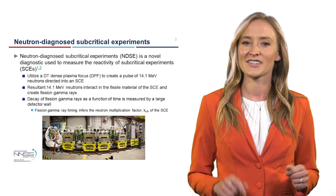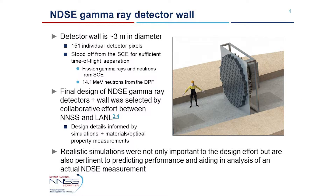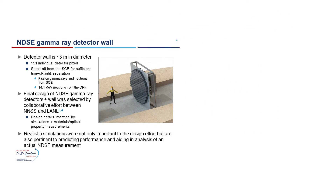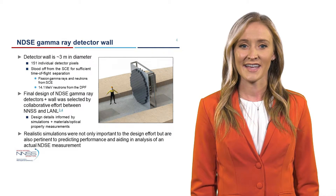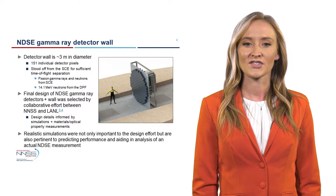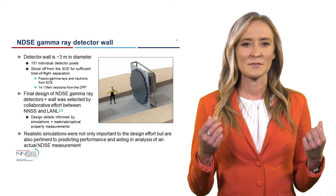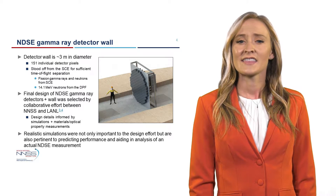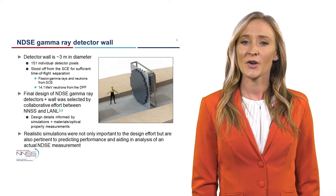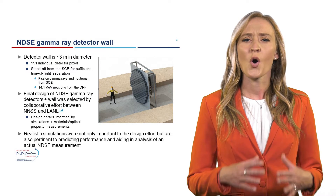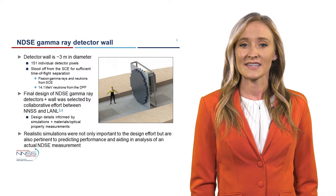We do this with a large detector wall. The NDSC gamma ray detector wall is approximately three meters in diameter and consists of 151 individual detector pixels. The wall is stood off from the subcritical experiment approximately 20 meters to enable the time-of-flight separation. The final design of the NDSC gamma ray detectors and wall was selected as part of a collaborative effort between our team at the NNSS and the detector team at Los Alamos National Laboratory. The design details were informed by many simulations coupled with materials and optical property measurements.